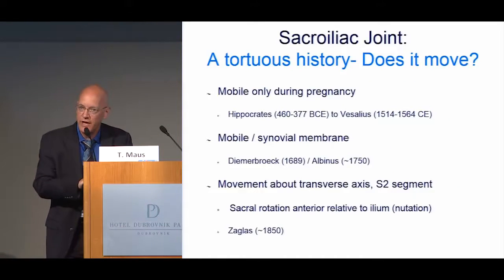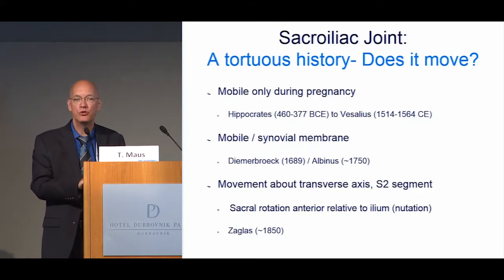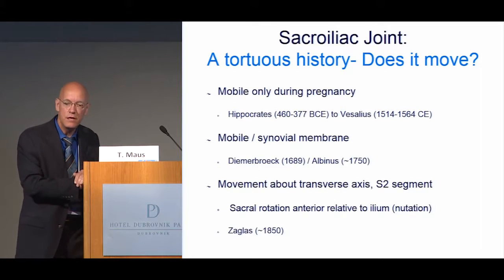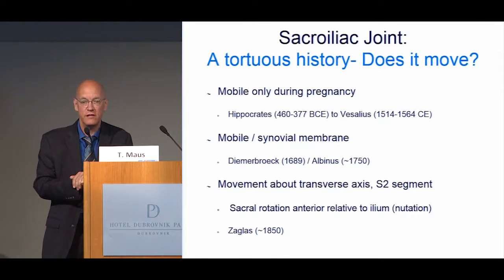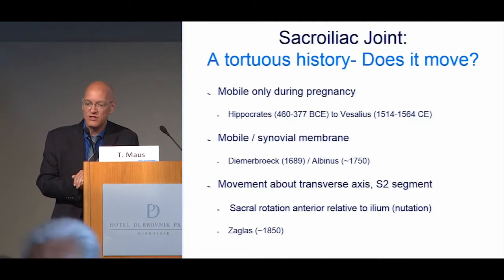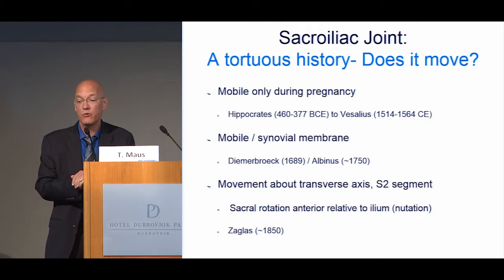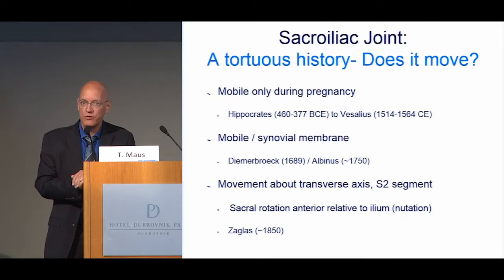The sacroiliac joint is a very sinuous and tortuous joint, and its history in terms of evaluation is equally tortuous. If one looks at the millennium from Hippocrates to Vesalius, it was thought that this joint did not move or was mobile only during pregnancy. In the 17th and 18th century, anatomists finally discovered a synovial membrane — hence it must move to some degree, and it was therefore classified as a joint. In the 19th century, it was identified that there was movement around a transverse axis at the S2 segment.